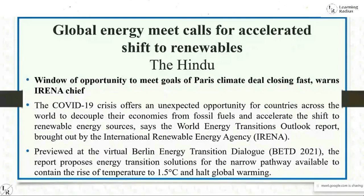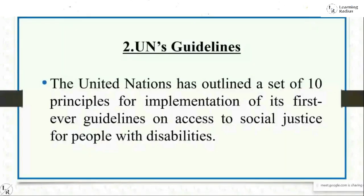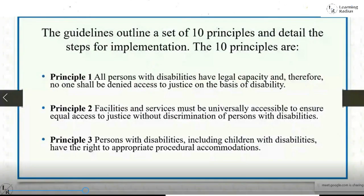The next discussion is about UN guidelines. The United Nations has outlined a set of 10 principles for implementation of its first-ever guidelines on access to social justice for people with disabilities. These guidelines outline a set of 10 principles and detail the steps for implementation.